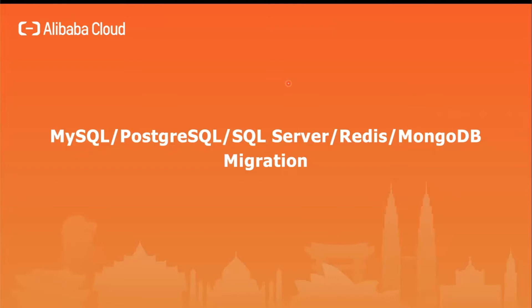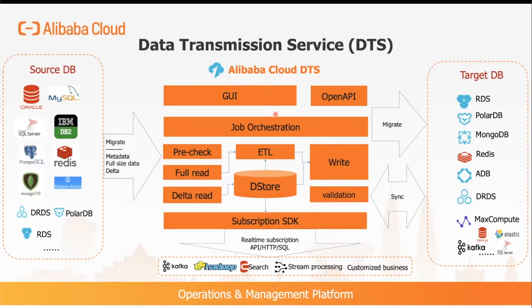Let us look at how we can use Alibaba Cloud tools to migrate databases like MySQL, Postgres, SQL Server, Redis, or MongoDB to Alibaba Cloud. One of the tools you can use is DTS, or Data Transmission Service. It's an any-to-any database migration or replication. It supports incremental changes as well, so you can migrate data even when there is traffic hitting your source database. You can bring your Redis database to Cloud, or bring your MySQL to RDS or PolarDB.